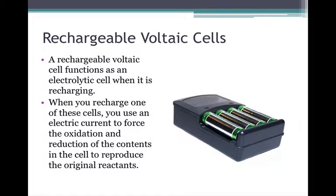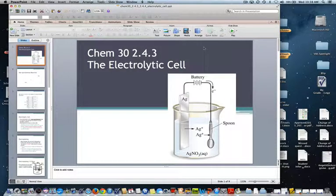Another reason you would run current into a cell is to recharge them. So you can have cells, like voltaic cells, that normally would produce energy, but run current through them and recharge them. The rechargeable voltaic cell functions as an electrolytic cell when it's charging. When you recharge one of these cells, you use an electric current to force the oxidation and reduction of the contents of the cell to reproduce the original reactants. And that is our discussion of the electrolytic cell.